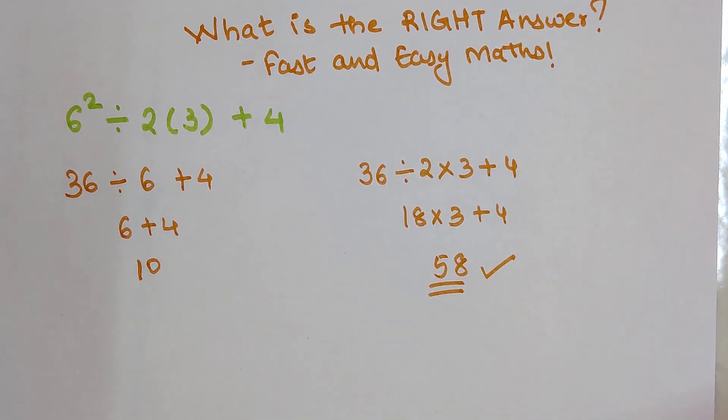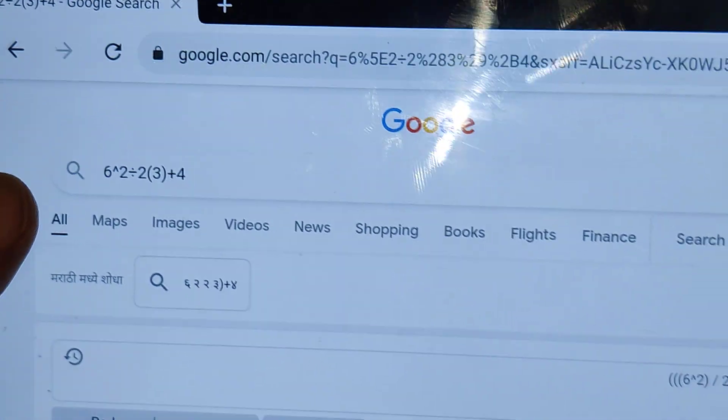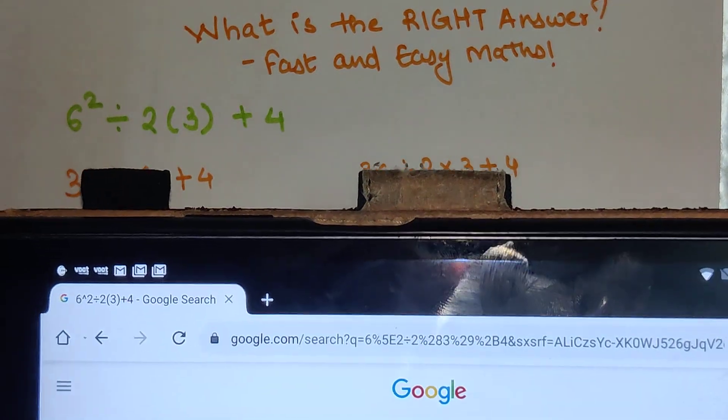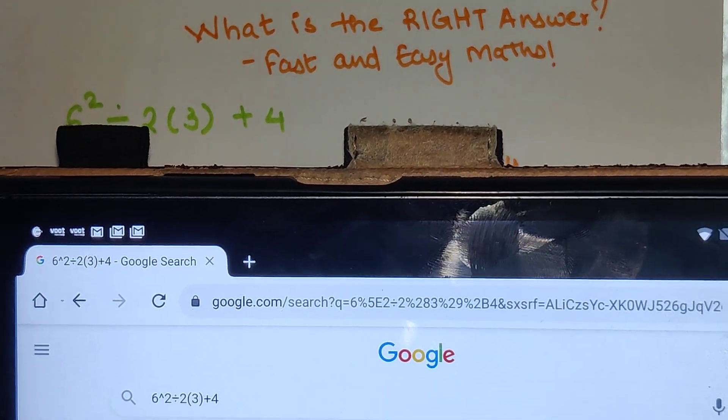If you want to check, you can see I have put the same equation in Google: 6 squared divided by 2 into, in a bracket there is a 3 plus 4, and the answer over here is 58.